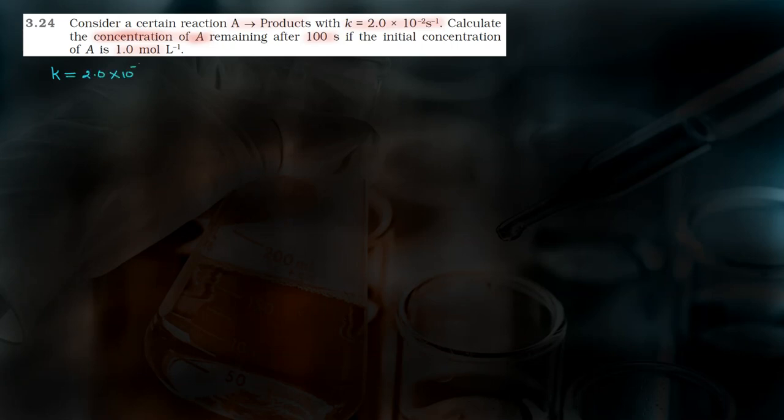Let's see what is given to us. First, we are given the value of K. K is 2.0 into 10 to the power minus 2 second inverse. Seeing 'second inverse' as the unit, we should immediately recognize that this is a first order reaction.